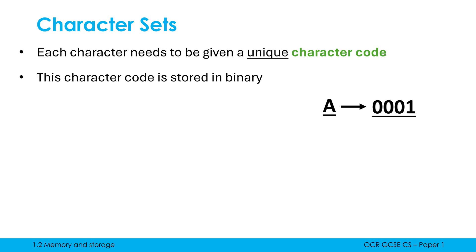I could just decide I want to store capital A as one in binary. I decide to store four bits for each character code — I can just decide this. There is no definitive way to assign characters to character codes. Some human just decides, 'A is one.' That binary value is what we call the character code.